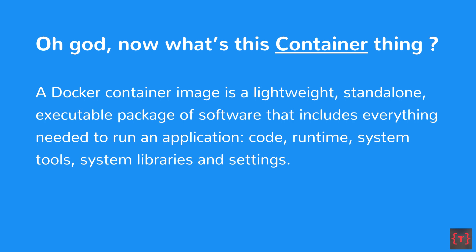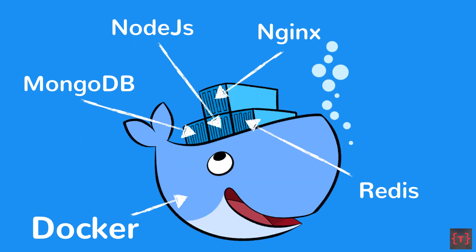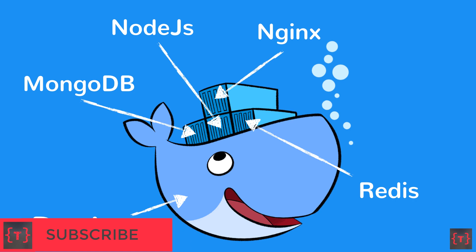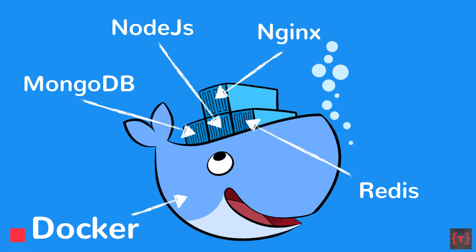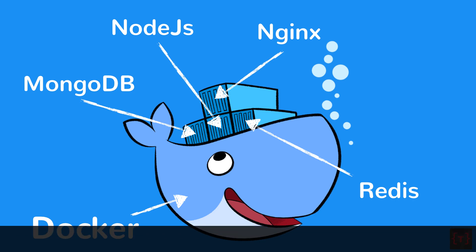When you create your image — which we'll do later in the video — you'll learn how these images work, how to create them, and how to make a container run from that image. Basically, we have our system with Docker installed — represented by the blue whale logo — and all the containers are individual environments created for specific packages, like a MongoDB container running in its own environment and a Node.js application running in its own environment.